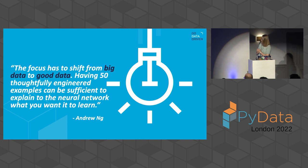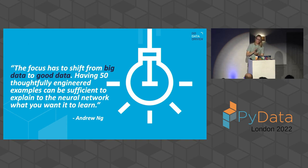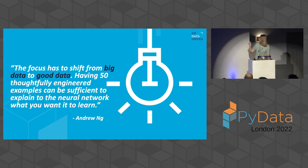When we talk about data-centric AI, Andrew Ng states that having 50 thoughtfully engineered examples can be sufficient to explain to a neural network what you want it to learn. The focus has to shift from big data to good data.